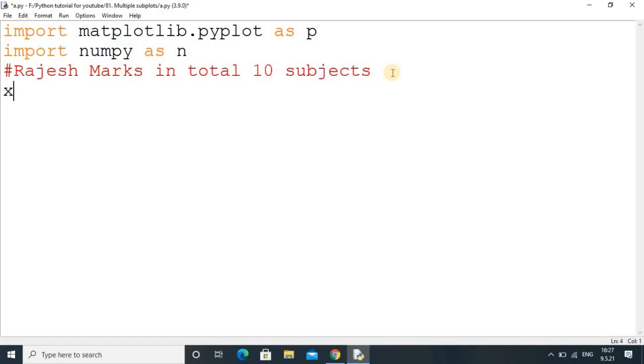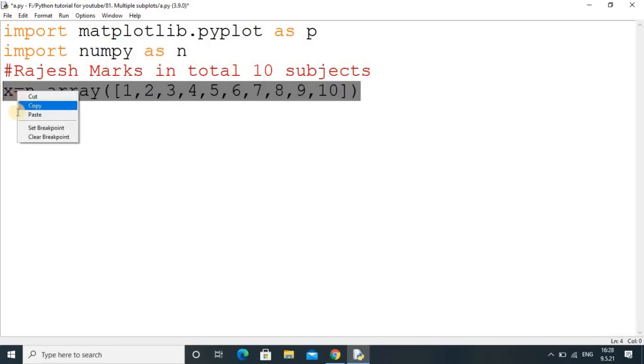I will create the first array x using n.array, and here in this array we will write the subject codes. We are assuming we have total 10 subjects, so I will add up to 10. We have added total 10 subject codes: first subject code is 1, then 2, 3, 4, up to 10.